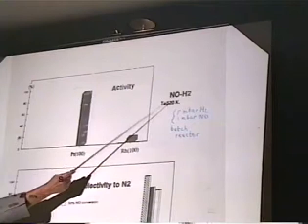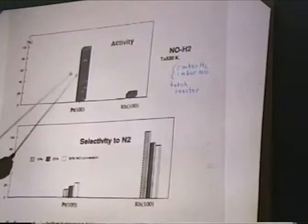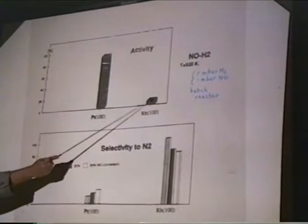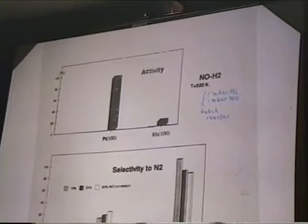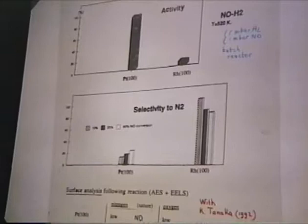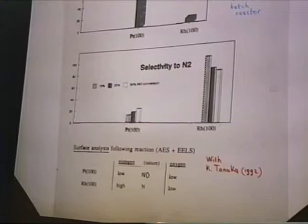Let's start with steady-state reaction conditions. The reaction is nitric oxide with hydrogen at very low temperature — this is just one example. A temperature of 520K illustrates the activity of platinum at low temperature; it is already quite high. For rhodium, with a similar surface structure, the activity is very low. But when you look at the selectivity, it is very different: rhodium is extremely selective to dinitrogen, while the selectivity of platinum is very poor.